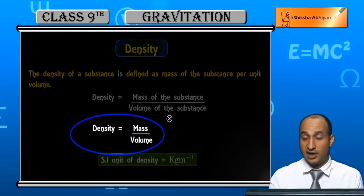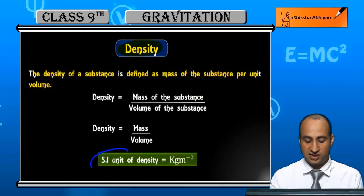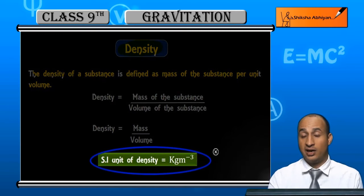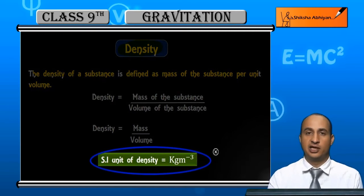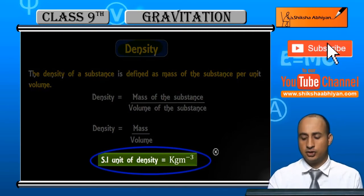Students, mass is in kilograms and volume is in meter cube. So what is the unit of density? The unit of density is kilogram per meter cube.